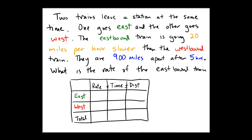The eastbound train is going 20 miles per hour slower than the westbound train, and they are 900 miles apart after 5 hours. The question is, what is the rate of the eastbound train?